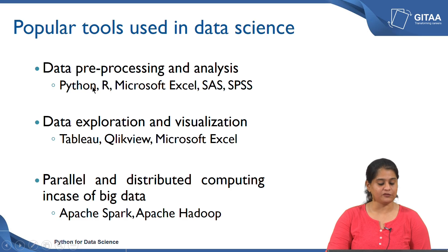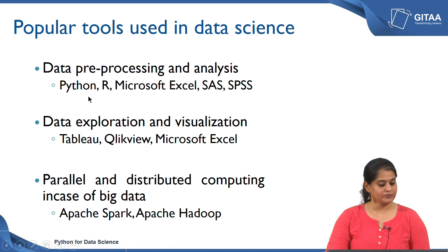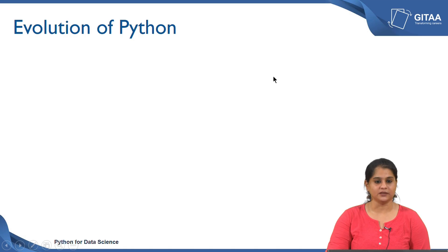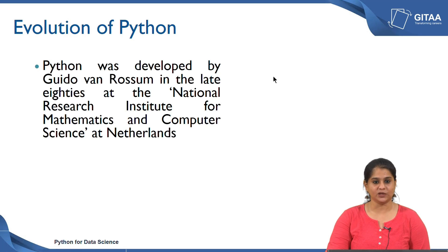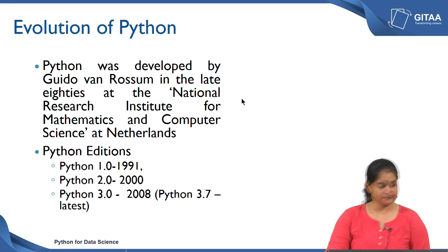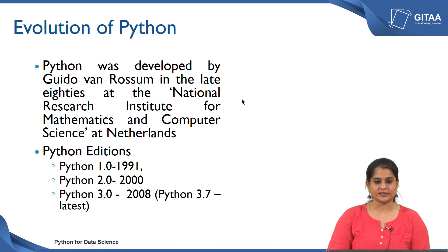In this course we are going to be mainly focusing on tools required for data preprocessing and analysis, and specifically we are going to look into Python. Python was developed by Guido van Rossum in the late 80s at the National Research Institute for Mathematics and Computer Science, located in the Netherlands. The first version was released in 1991, the second in 2000, and the third in 2008, with version 3.7 being the latest.